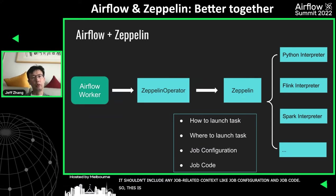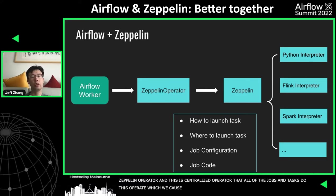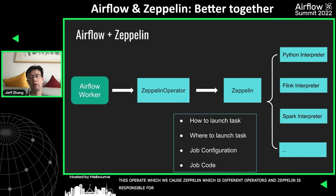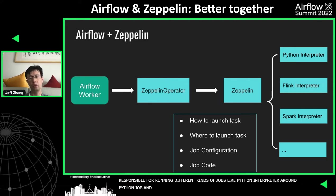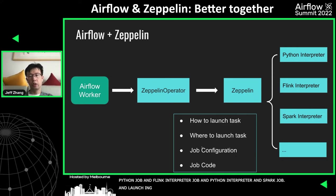This is what we'd like to suggest: combine Airflow plus Zeppelin. We introduce a Zeppelin operator — a centralized operator. All the tasks related to this operator will call Zeppelin. Since Zeppelin supports different interpreters, Zeppelin is responsible for running different kinds of jobs: the Python interpreter runs the Python job, the Flink interpreter runs the Flink job, the Spark interpreter runs the Spark job. So we didn't put the job configuration, job code, and where/how to launch tasks in the Zeppelin operator — we moved that into the Zeppelin side.